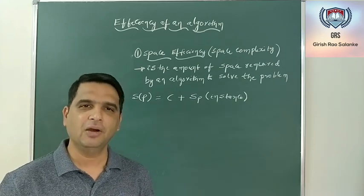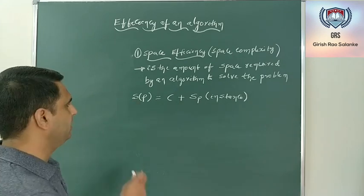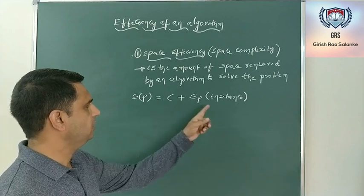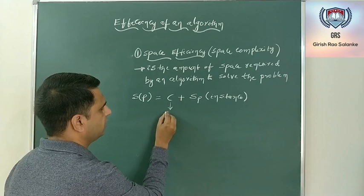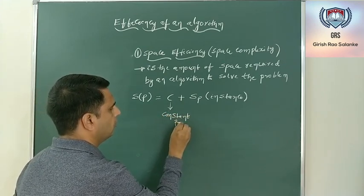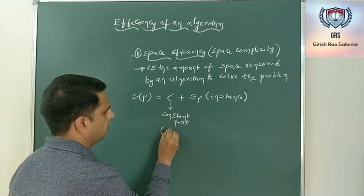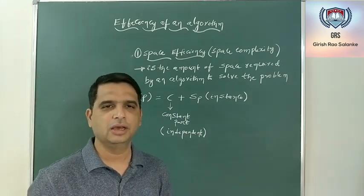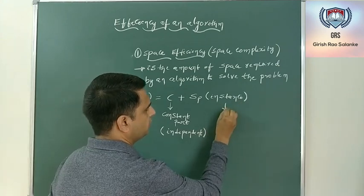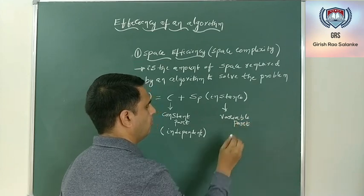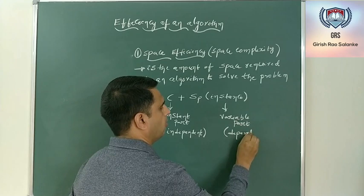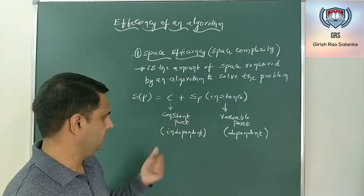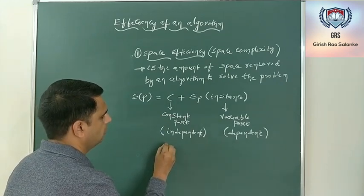The space complexity of a particular algorithm can be expressed with an equation denoted as S(P), where S denotes space and P denotes the problem. That is, the space complexity can be described as the summation of C, the constant part representing independent variables used in the algorithm, plus S(P) of instance, the variable part which is dependent — the space required for the algorithm to execute, which is the space used to store the local variables.